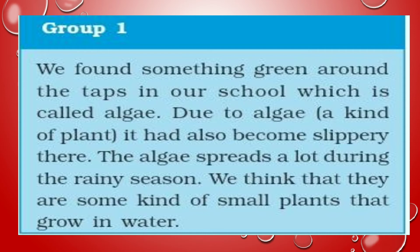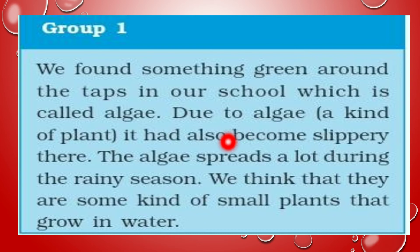Group 1: we found something green around the taps in our school, which is called algae. हमने अपने school की taps के आसपास कुछ green color की संरचनाएँ देखीं जिसे algae कहा जाता है. Due to algae — a kind of plant — it had also become slippery. Algae की वजह से वो जगह slippery हो गई. The algae spreads a lot during the rainy season. ये algae बरसात की season में ज़्यादा फैलती है. We think they are small plants that grow in water. हमें लगा कि ये छोटे-छोटे पौधे हैं जो पानी में उगते हैं.